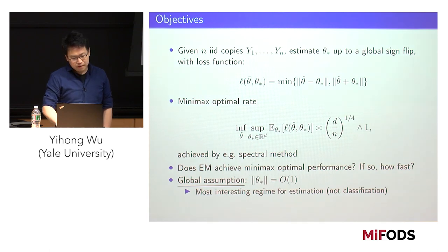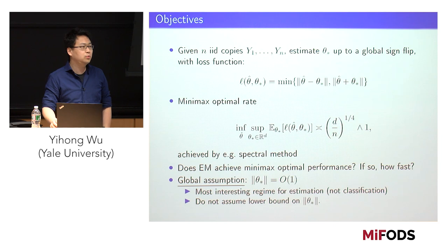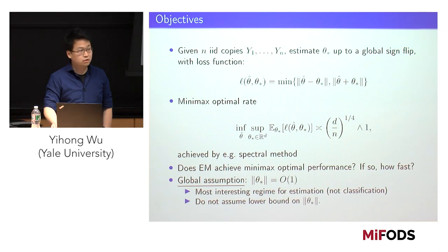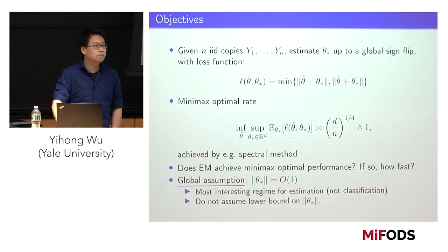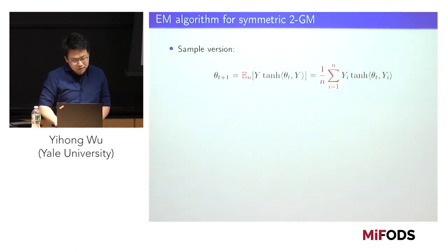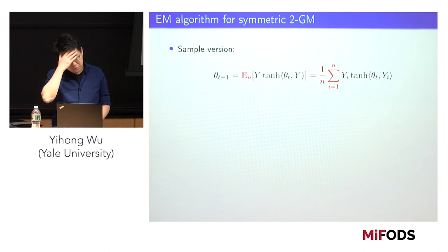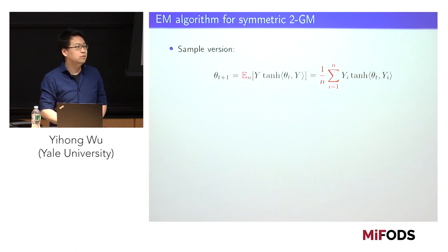I'll assume an upper bound on the norm of the center and no lower bound — this is quite standard. If you execute the EM algorithm recipe on this model, it takes a very simple form: an empirical mean of each sample weighted by estimates of its label. The estimates take real values between plus and minus one and try to do sign correction and average them. Throughout the talk, I'll write the n-sample average as expectation sub n.